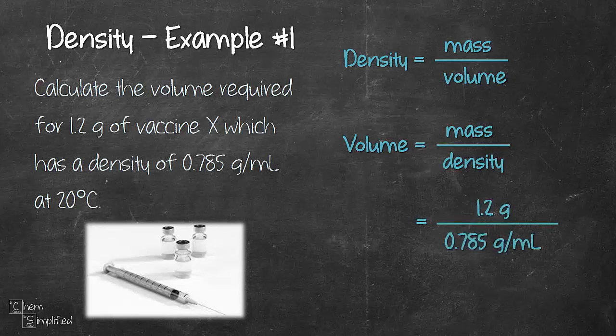Dividing these two numbers will give us 1.5, and if we cross out the unit, it will leave us with mL. So the volume is 1.5 mL. So we can easily draw out the volume of 1.5 mL using a syringe, much easier than if we were to measure out 1.2 grams. Make sense? This is a really direct, simple problem related to density.